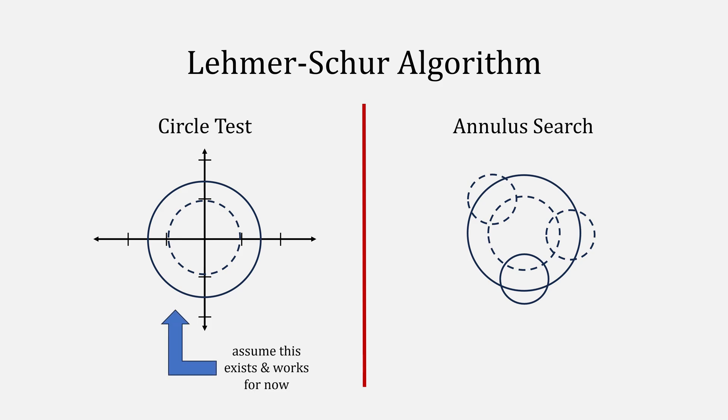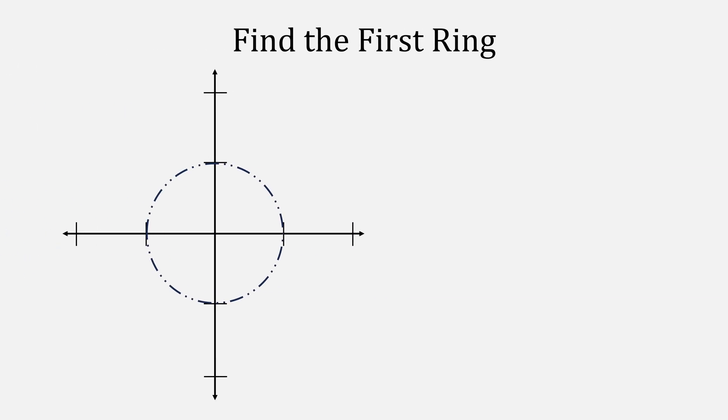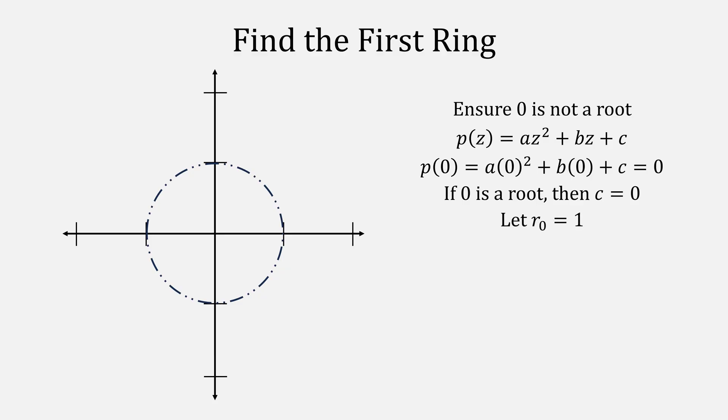We'll just start by assuming that there is a test and that it works, focusing more on the analysis. Our first task, find a ring that contains the root. But one thing to note is that zero should not be a root because if you had a polynomial and you plugged in zero, that would mean the constant term was zero if zero was a root. Simply deflate if that's the case.